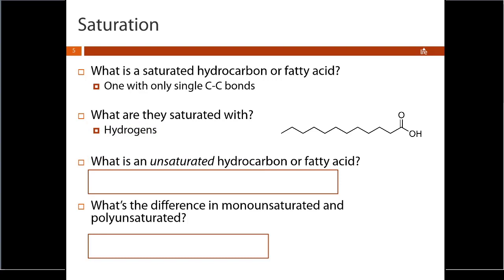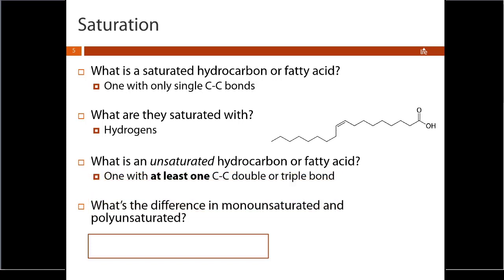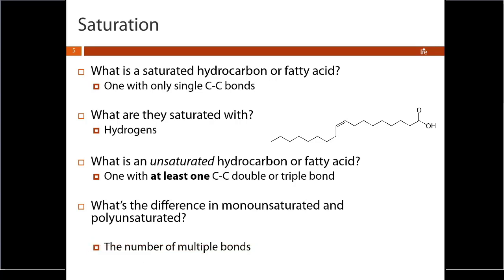An unsaturated hydrocarbon is the opposite — it's a fatty acid with at least one carbon-carbon double bond or triple bond. You'll often see these broken down into monounsaturated fatty acids, which have only one double bond, and polyunsaturated fatty acids, which can have multiple double bonds.